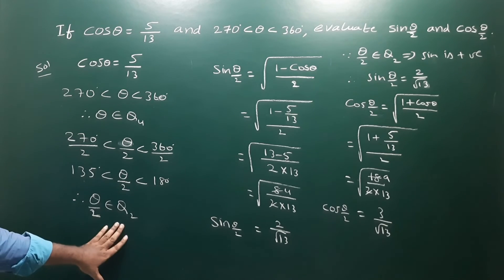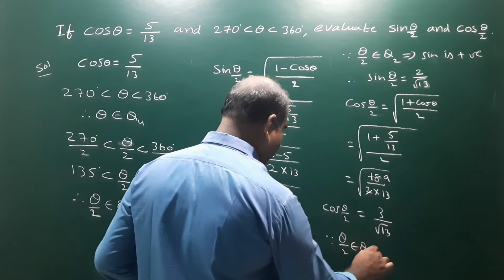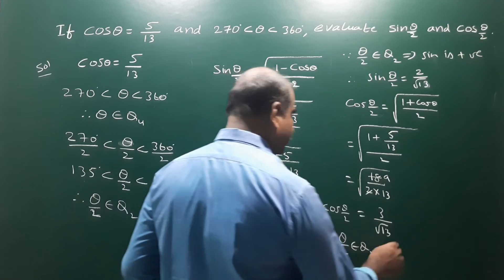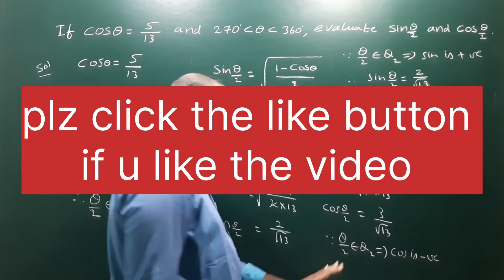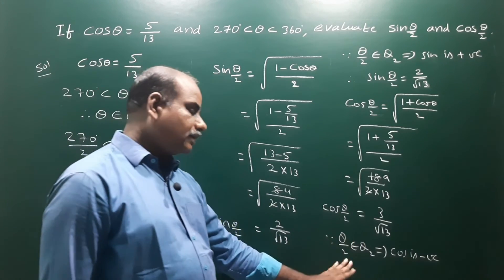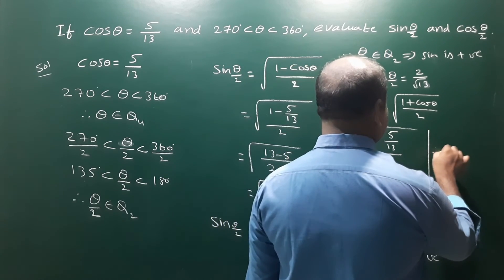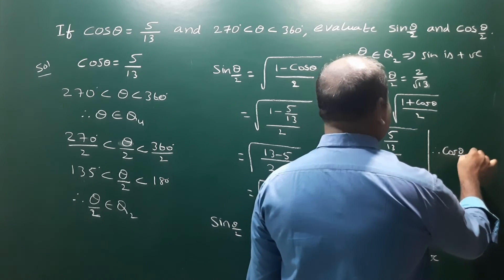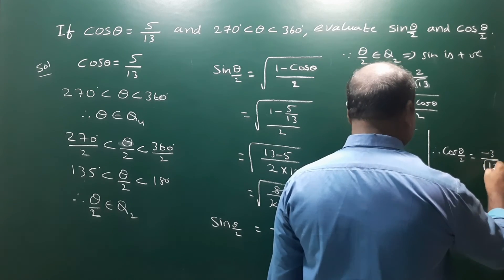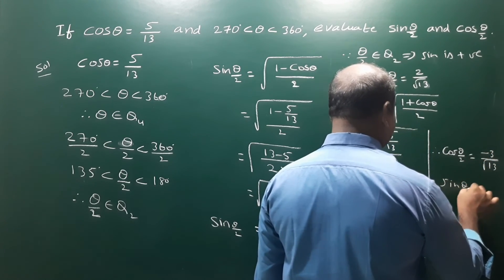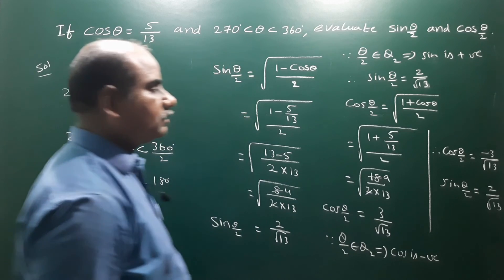But theta by 2 belongs to the second quadrant. In the second quadrant, cos is negative. Therefore cos theta by 2 is taken as minus 3 by root 13. And sin theta by 2 is 2 by root 13. So those are the final values.